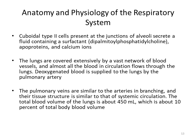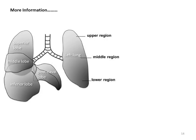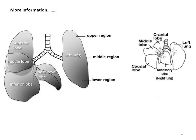The lungs are covered extensively by a vast network of blood vessels and almost all the blood in circulation flows through the lungs. Deoxygenated blood is supplied to the lungs by the pulmonary artery. Pulmonary veins are similar to the arteries in branching and their tissue structure is similar to that of the systemic circulation. The total blood volume of the lung is about 450 ml, which is about 10% of the total body blood volume. The alveoli are surrounded by the hairnet capillary network, from which blood oxygen and carbon dioxide are exchanged.